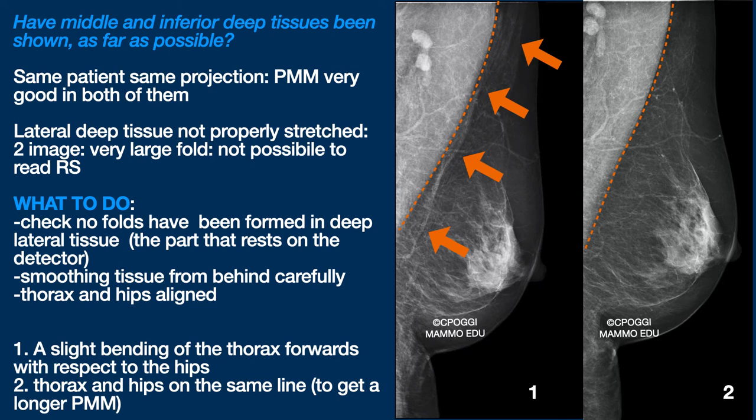Another interesting annotation: here is a slight inclination, a bending of the thorax forwards in the first image, corrected in the second. Having thorax and hips aligned generally allows us to show more deep inferior tissue.